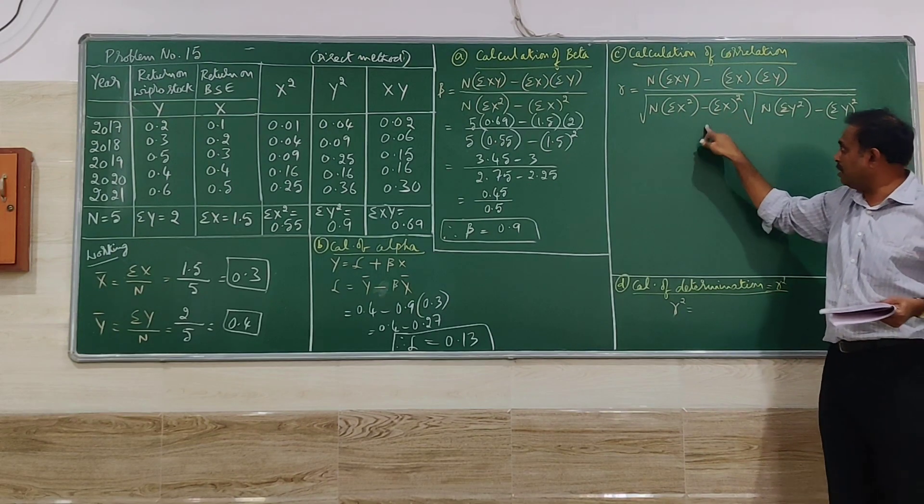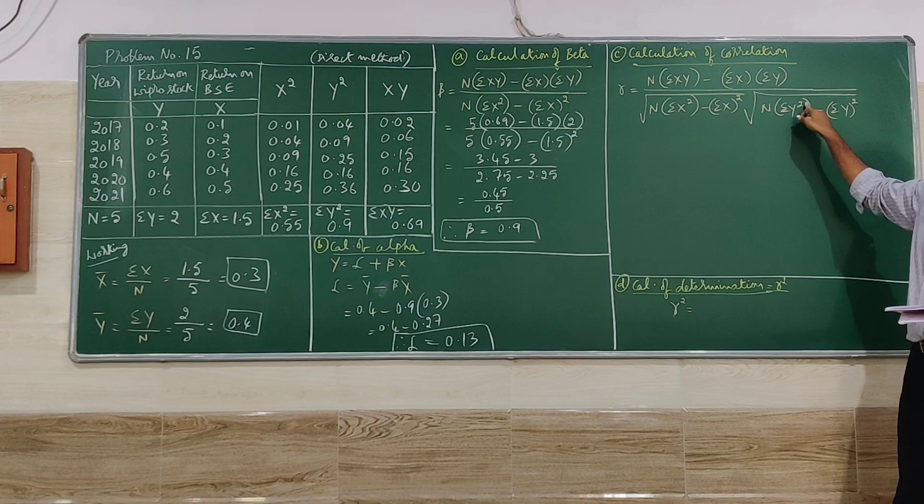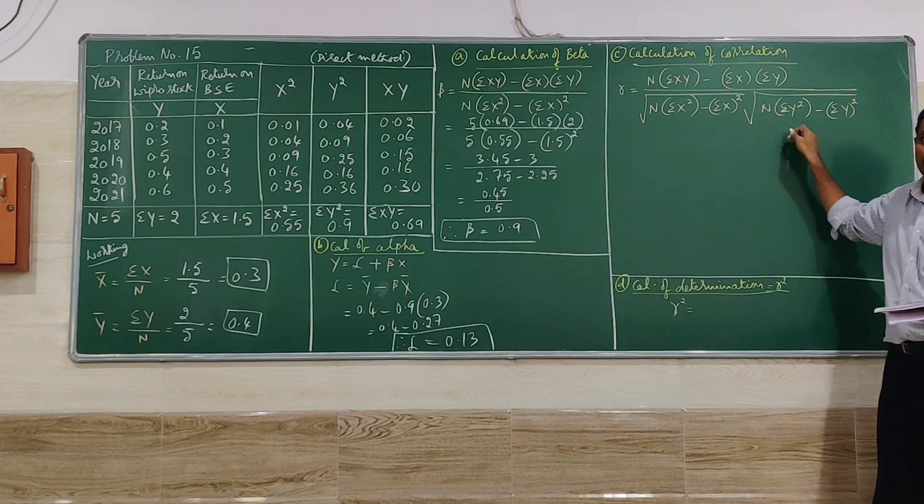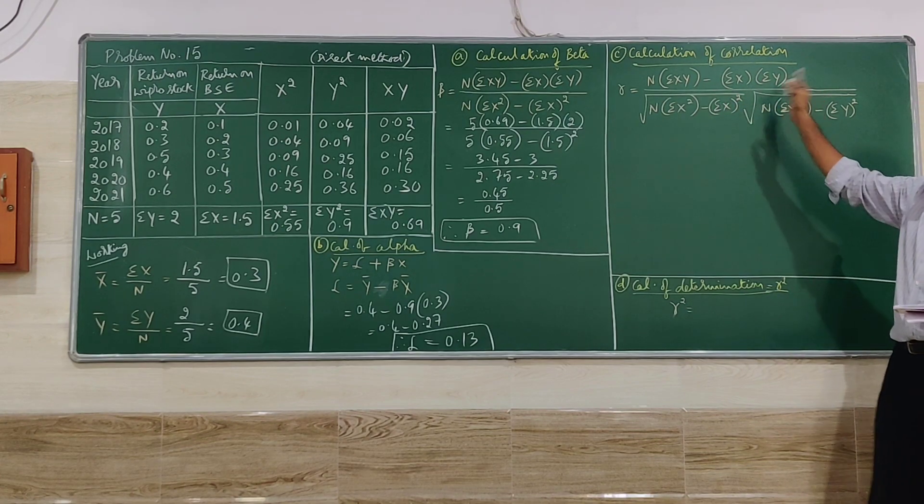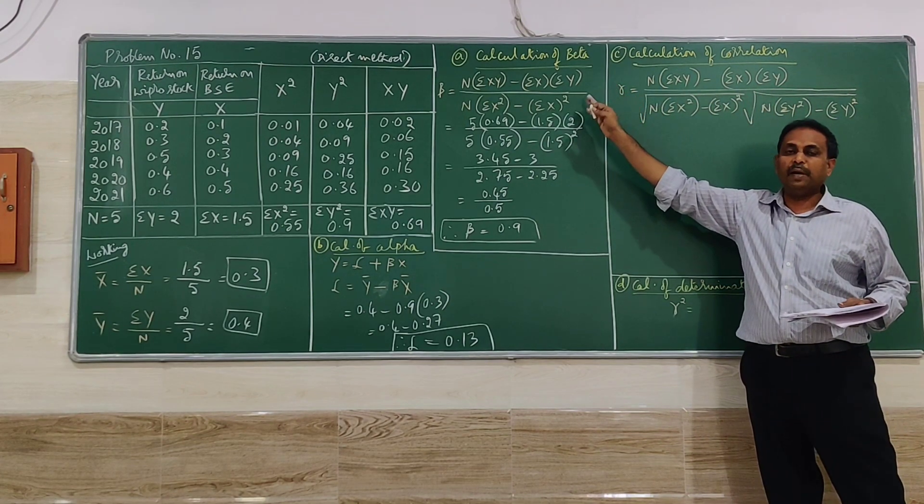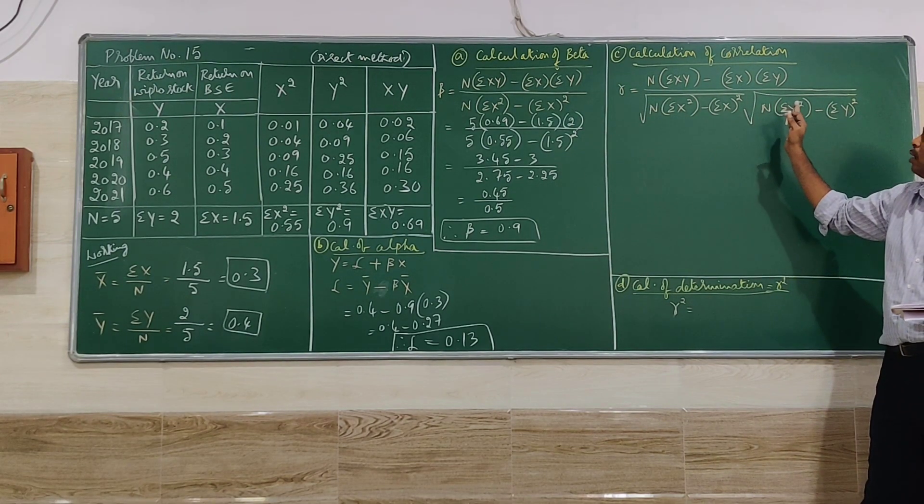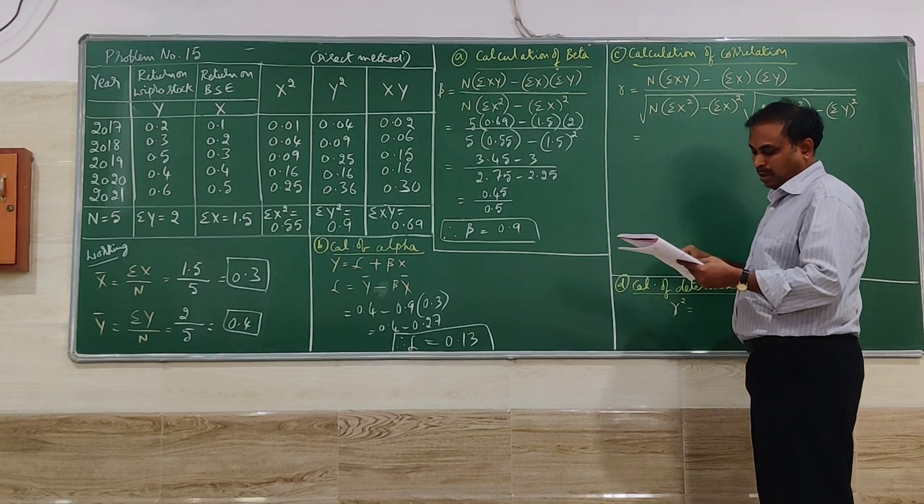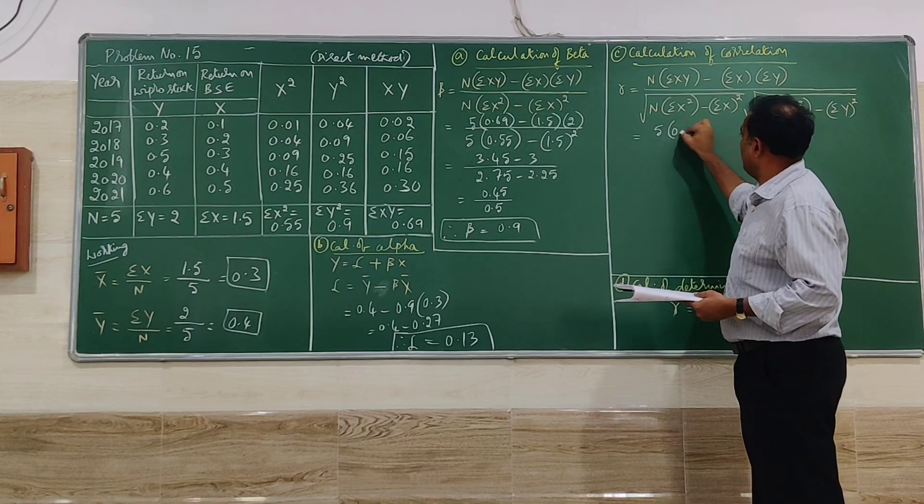But denominator, we have to square root. Then this square root multiplied by N into summation Y square minus summation Y whole square. Similar to this. So you have to be careful how to remember the correlation formula and beta formula. If you know very well, you can extend that to the correlation formula. So going for the substitution again. The numerator remains same.